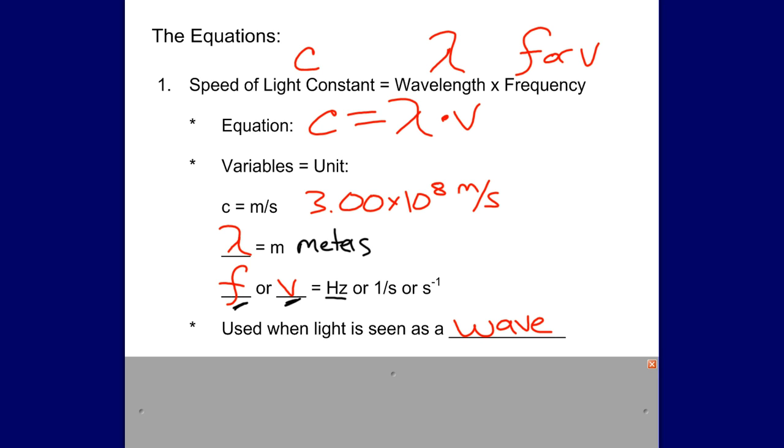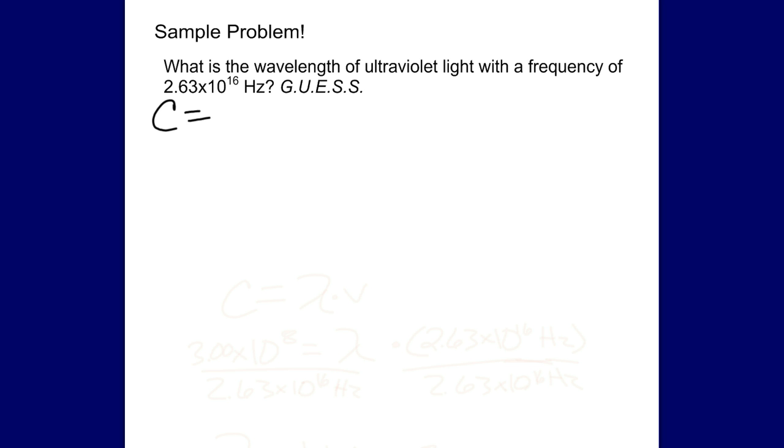We will be using this when light is seen as a wave. Light behaves like a wave and as a particle, so we are looking at light as a wave. We need to use this equation C equals lambda times V. Let's take a look at an example problem, remembering C is always 3.00 times 10 to the 8th meters per second.